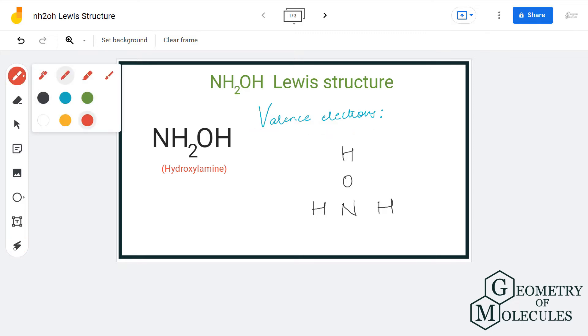Here we have one nitrogen atom which has five valence electrons. We have two hydrogen atoms, and both these hydrogen atoms have one valence electron. We have one oxygen atom which has six valence electrons and one hydrogen atom which again has one valence electron. So in total, we have 14 valence electrons for this molecule.